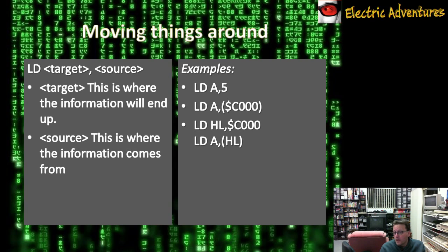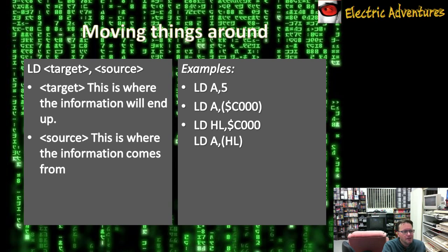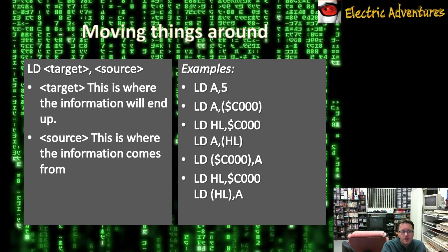Next example: we load HL with the value — because it's 16-bit, we need a 16-bit number, so it's an address $C000. Then we use LD A, (HL). Once again, the brackets signify we're specifying an address — go and use HL, look up where in memory that is, and get the contents of that. So if the memory location $C000 had the value 5, we would end up with 5 in the accumulator. The other way around: we can take what is in the accumulator and store it in a memory address. Or, with the HL register round the other way, we could set HL to a memory address and then store what's in A in that memory address.